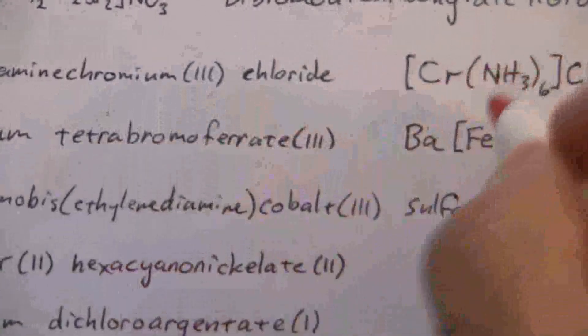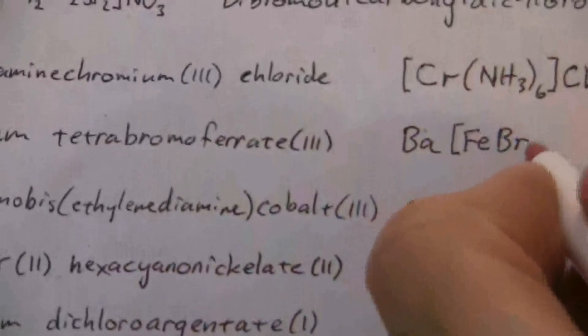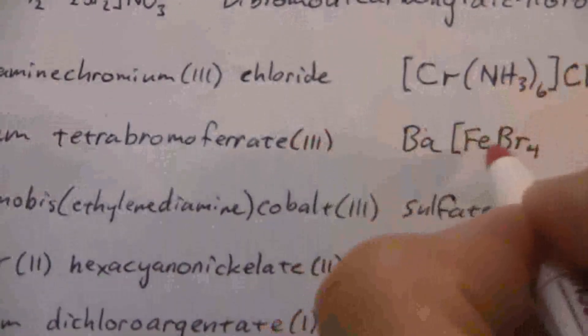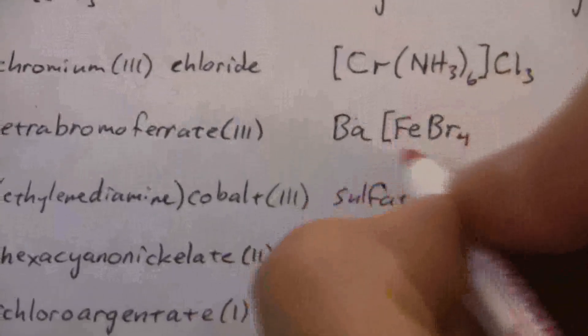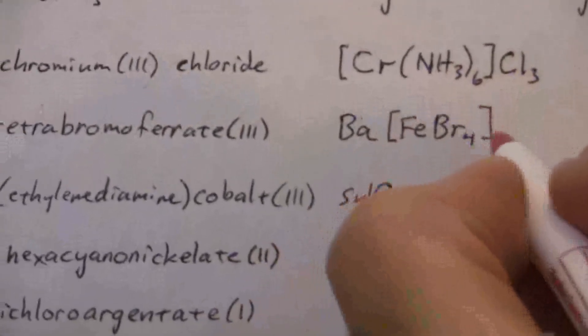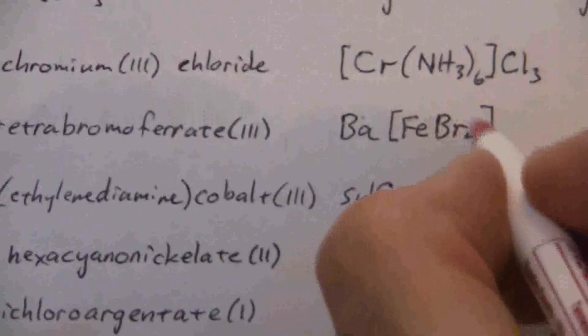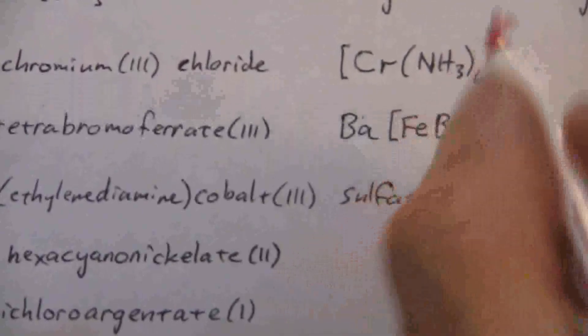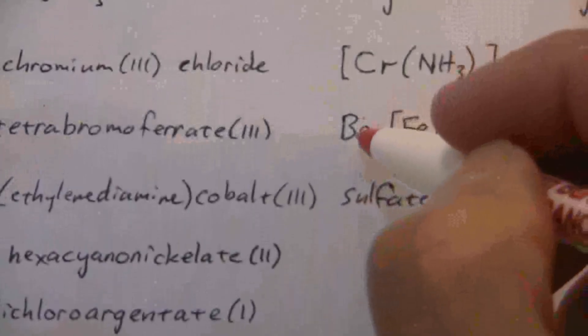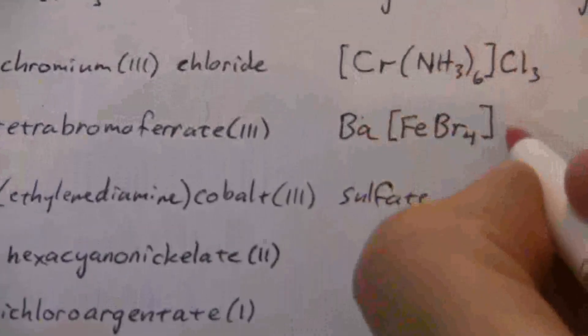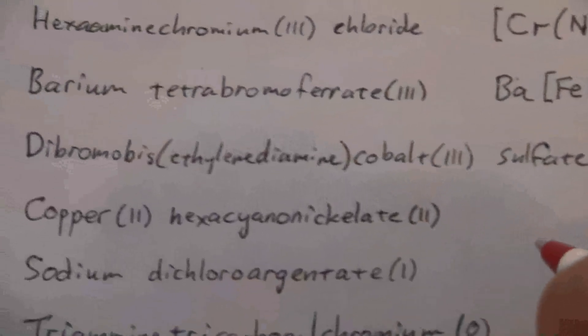But it's tetrabromo, so that's Br4, and if we have a three, positive three there, and the bromo is a negative one, that makes all of this a negative one charge. Negative four from there, positive three from there, so if all of this is a negative one, and my barium is a positive two, then I have to have two of those anions.